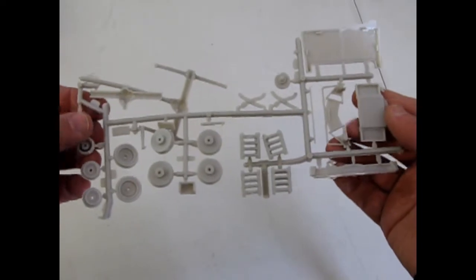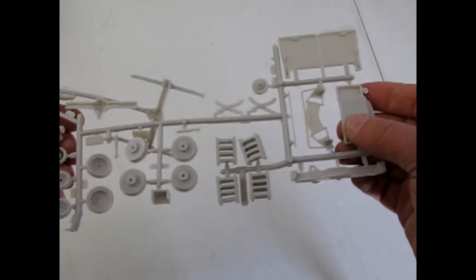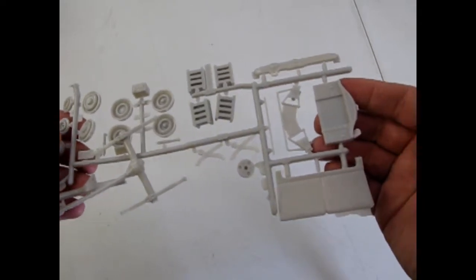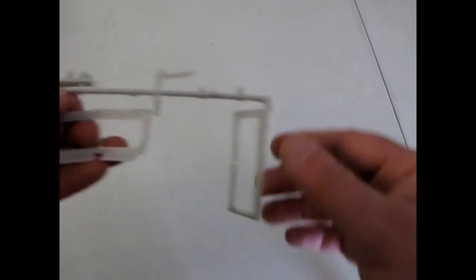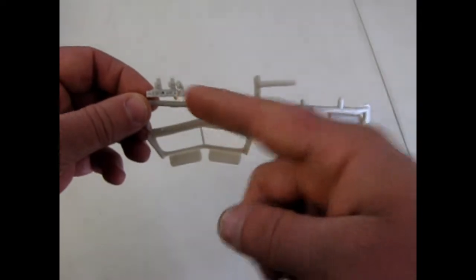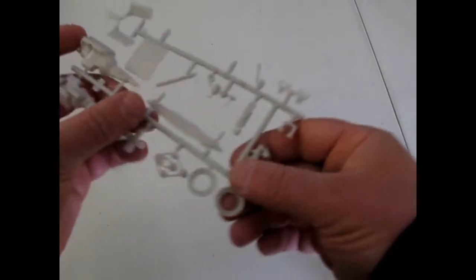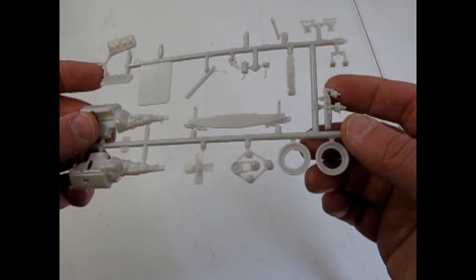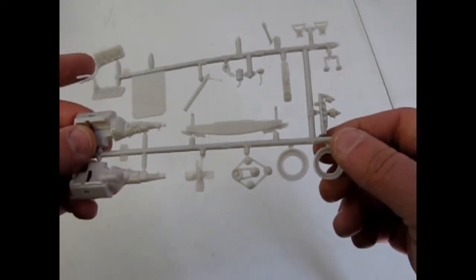Cinder blocks and seat and suspension bits, as well as wheels. The chopped and the stock windshield, as well as the dual carb setup. And here's our flathead Ford 80 motor, as well as the stock engine components.